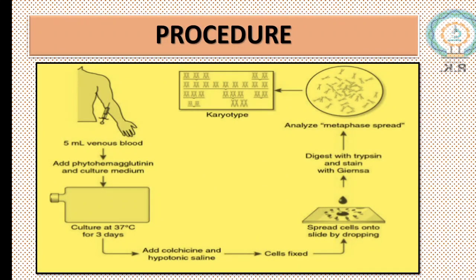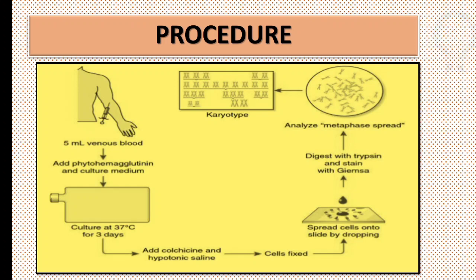The same process is illustrated here. You need to take 5 ml of venous blood, add phytohaemagglutinin and also culture medium. The culture is kept for 3 days at 37 degrees Celsius. After that, add colchicine and hypotonic saline solution to fix the cells. Take a suitable spread of cells onto a slide, add trypsin, and stain with Giemsa.